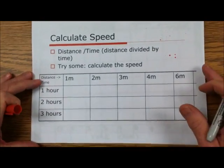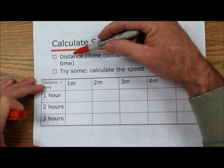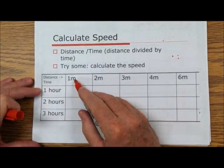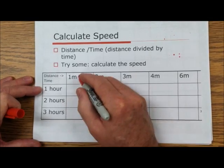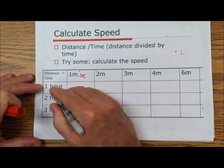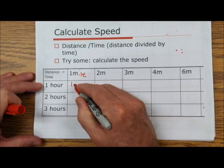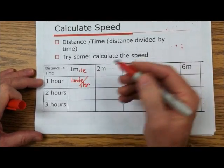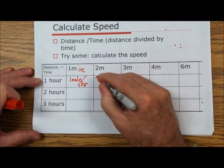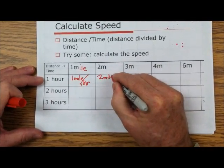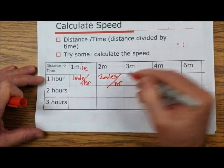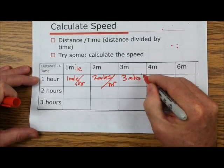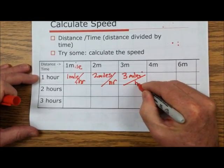Speed is distance divided by time. So we have one mile per hour — one mile is the distance, so we have one mile per one hour. Here we have two miles per hour, three miles per hour. Pretty easy.